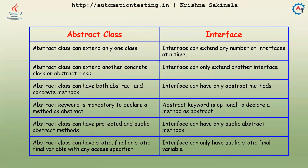An abstract class can extend only one class, so multiple inheritance is not possible with classes. An interface can extend any number of interfaces.